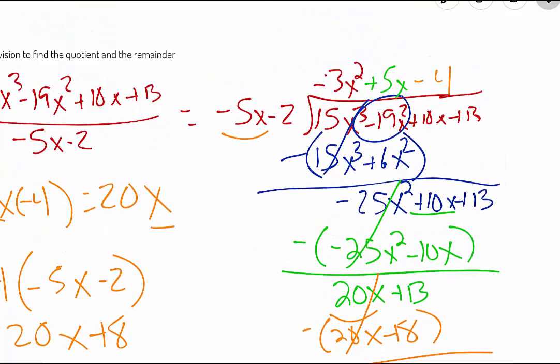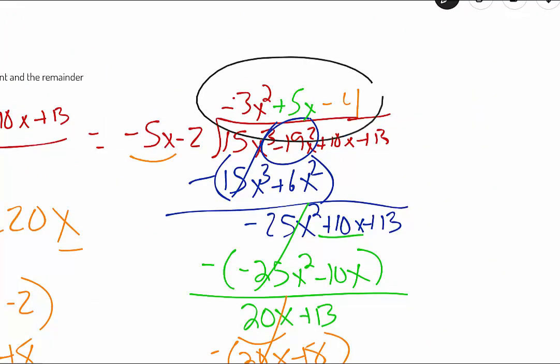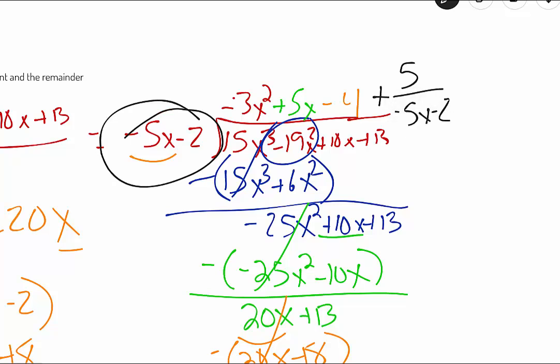So if we go back and we look at our quotient here, our quotient is this up here. So our solution is that plus our remainder. So our remainder was 5. So we just say plus 5 over our divisor of negative 5x minus 2.